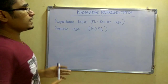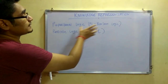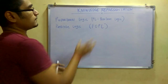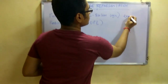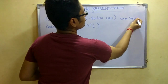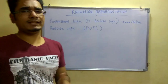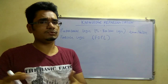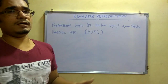Propositional logic is also called boolean logic, or PL. This boolean logic basically consists of either true or false statements, and it uses plain text or any declarative language for representing the logic.